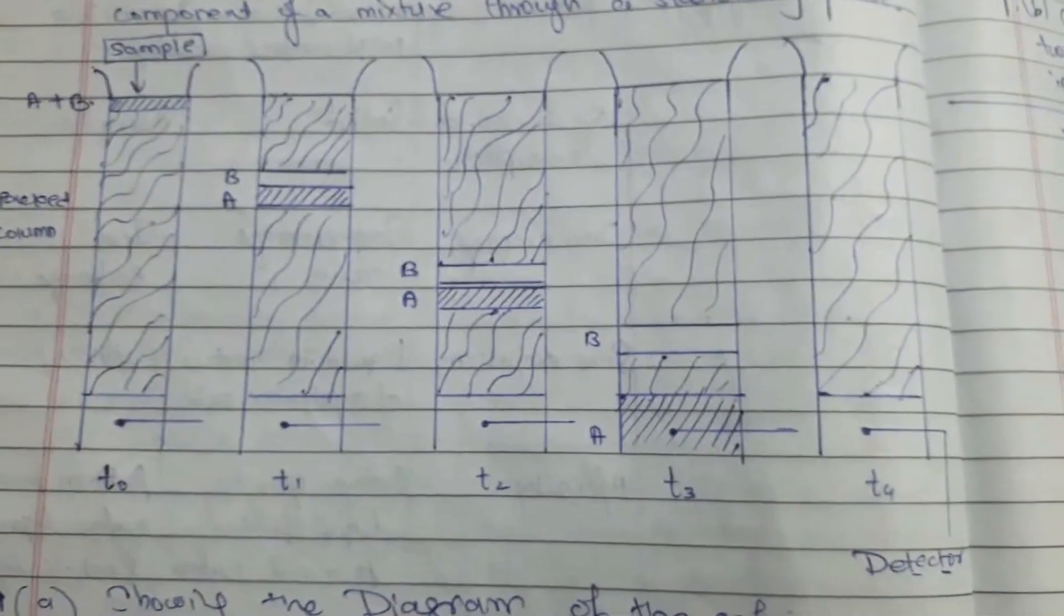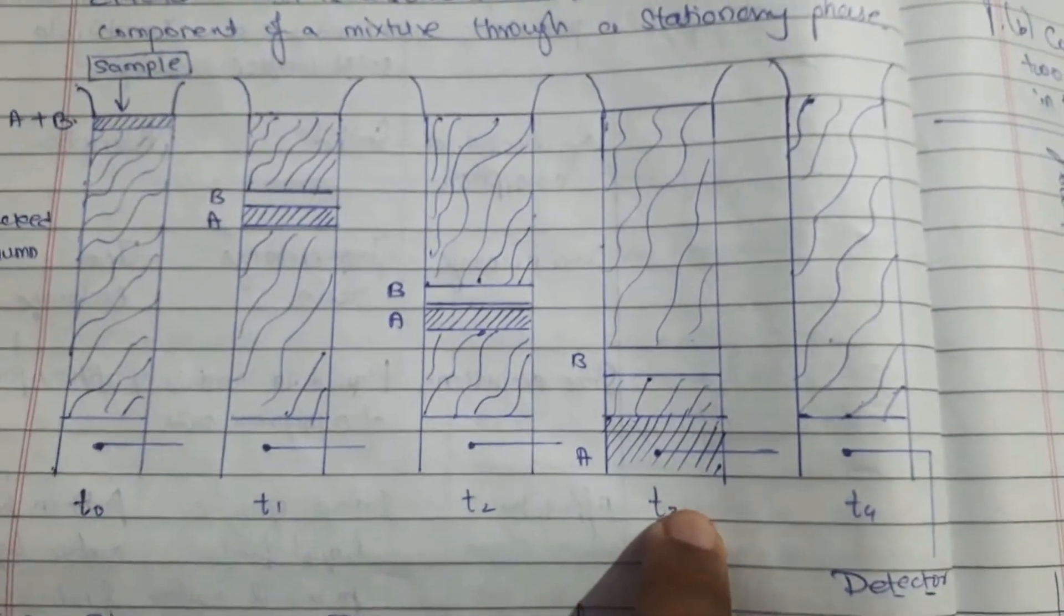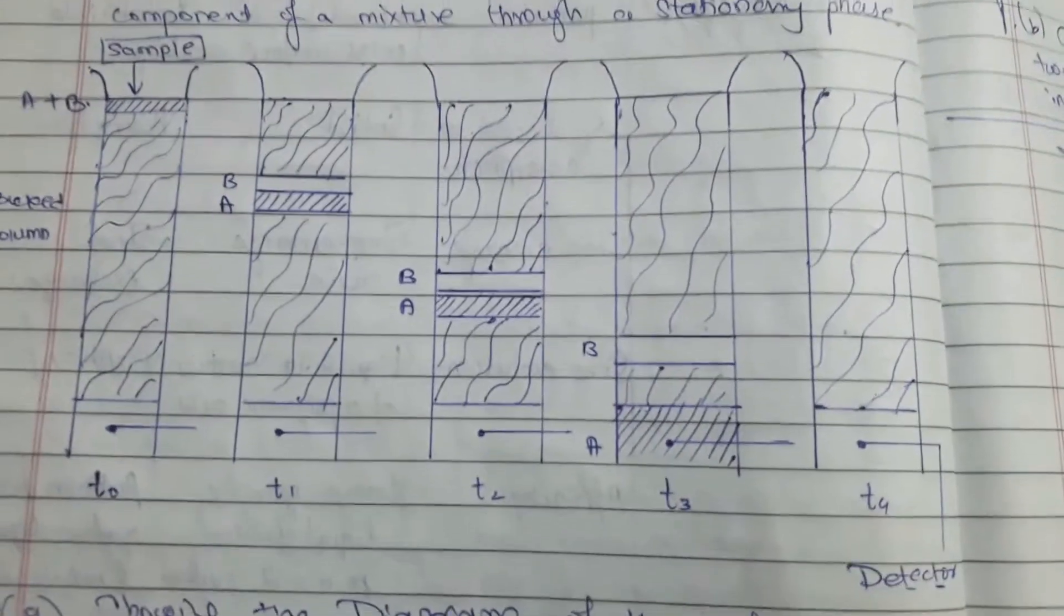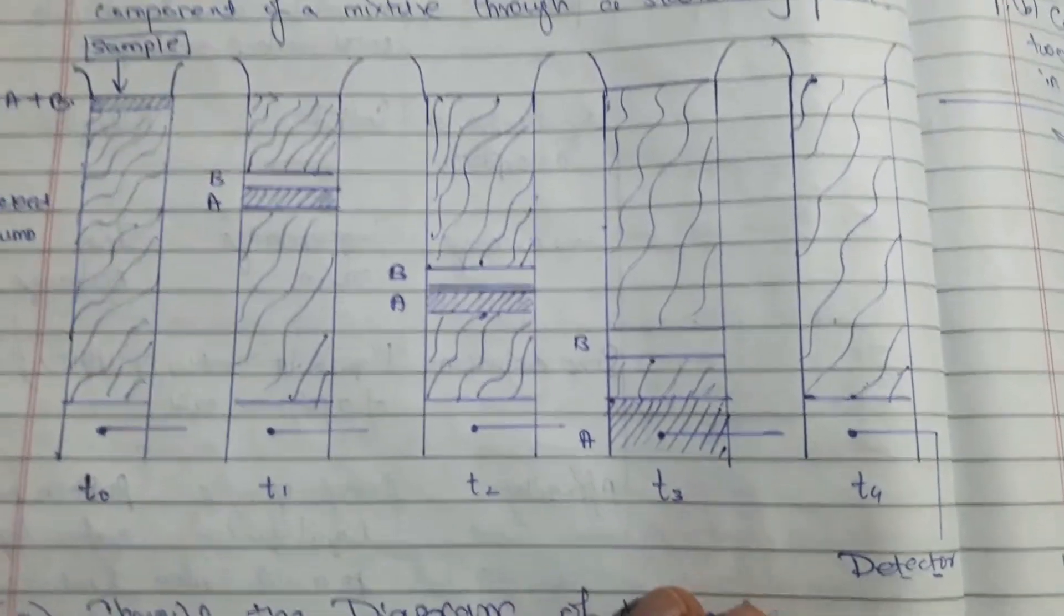Why? Because the affinity of component A towards the mobile phase is more compared to B. That's why A will first come out of the column, meaning it will elute first.